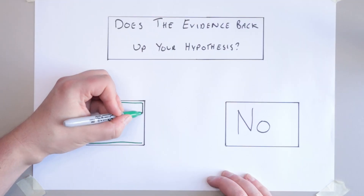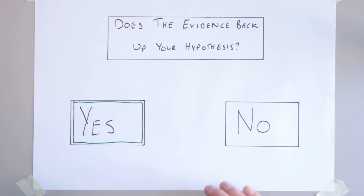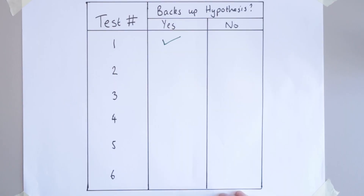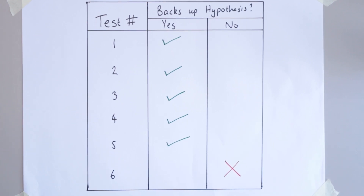If it's correct, excellent — the hypothesis is correct, at least for this set of evidence. Every test that's ever done in the future now has to also back up that same hypothesis. If the evidence collected doesn't support the idea, then a new hypothesis has to be created, one that includes and embraces the new evidence that was collected.